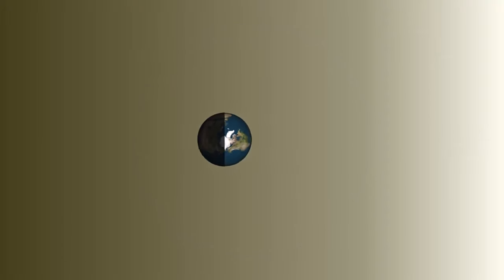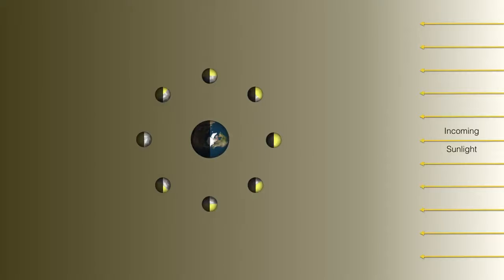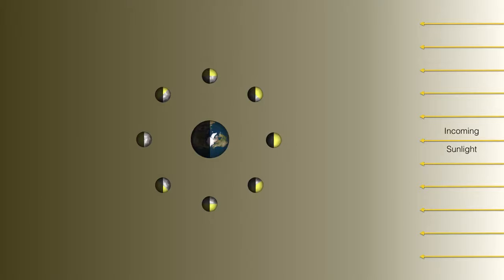Let's imagine for a moment you're standing on the earth and looking toward the incoming sunlight, and suppose the moon just happens to be between the earth and the sun. So we're looking at the first image of the moon that is to the right of the earth. If we were to look up and somehow see the moon, we wouldn't see a moon — the moon would be in silhouette. And we call this phase of the moon the new moon phase.